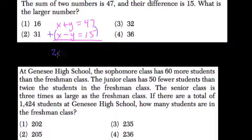x plus x is 2x. y plus negative y is 0, it cancels out.